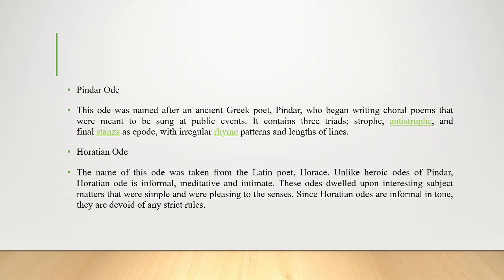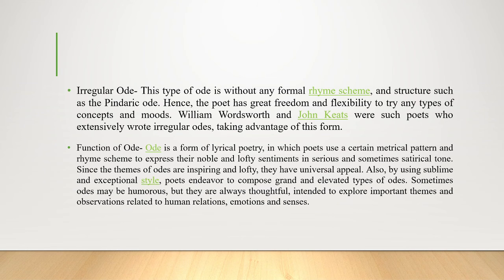The Horatian ode takes its name from the Latin poet Horace. Unlike the heroic works of Pindar, the Horatian ode is informal, meditative, and intimate, dwelling upon simple subject matters pleasing to the senses. Since Horatian odes are informal in tone, they are devoid of strict rules. The irregular ode has no formal rhyme scheme or structure, giving the poet great freedom and flexibility. William Wordsworth and John Keats extensively wrote irregular odes, taking advantage of this freedom.